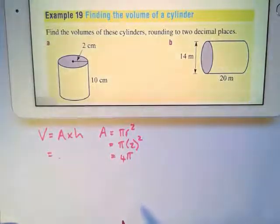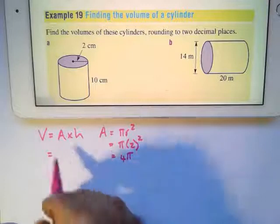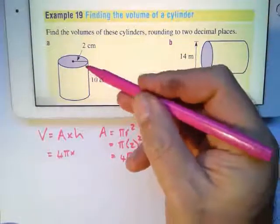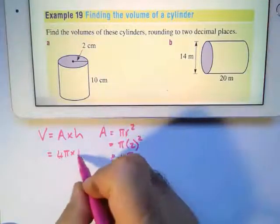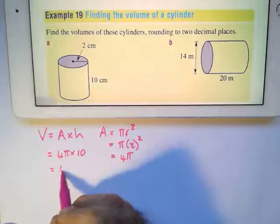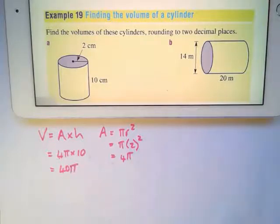To find the volume, I'm going to say the area is 4π and the height is this height, which is 10 centimeters. That's going to be 4π times 10, which is 40π.